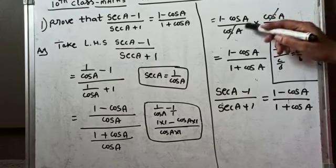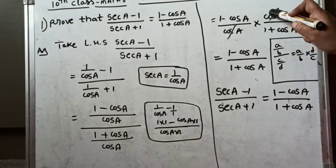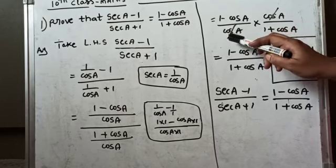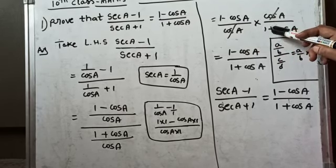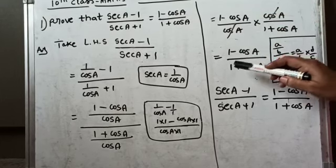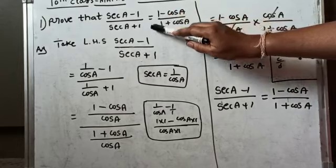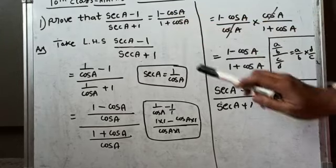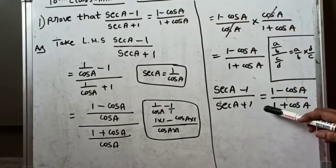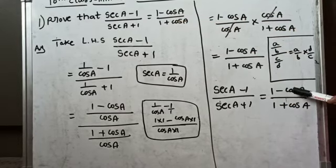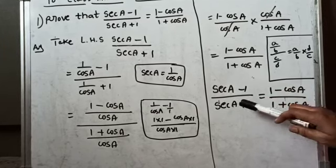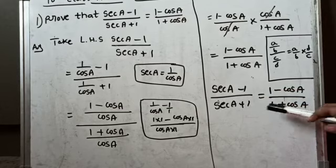After cancellation, we are left with (1 - cos A) / (1 + cos A). We have proved the RHS. So (sec A - 1) / (sec A + 1) = (1 - cos A) / (1 + cos A). LHS equals RHS. Proved.